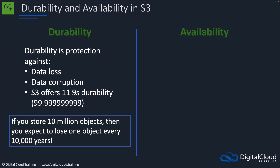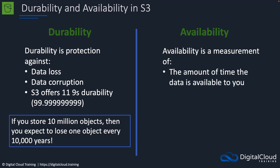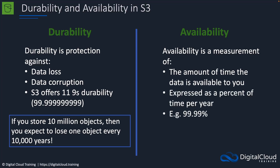Now what about availability? Durability means the data is not lost — it doesn't mean that you can actually access it. Availability is a measurement of the amount of time the data is available to you to use, so you can actually access it. It's expressed as a percent of time per year.